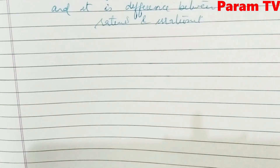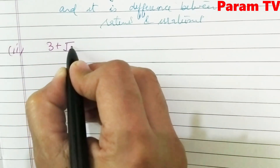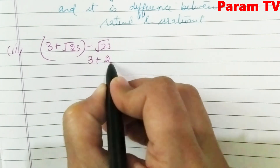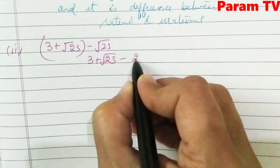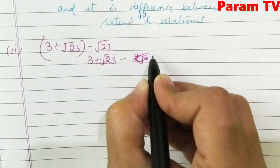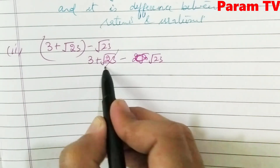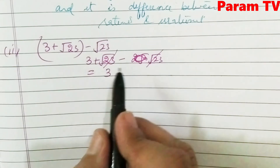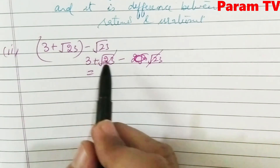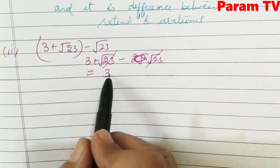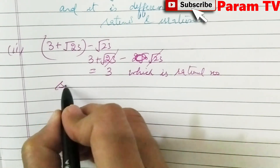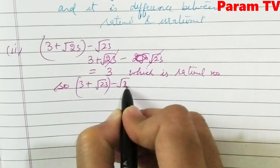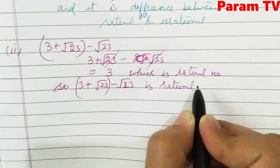Second part is 3 plus root 23 minus root 23. Let's solve it first — we open the bracket. Plus root 23 and minus root 23 cancel each other out. What is left is 3, which is a rational number. So 3 plus root 23 minus root 23 is rational.